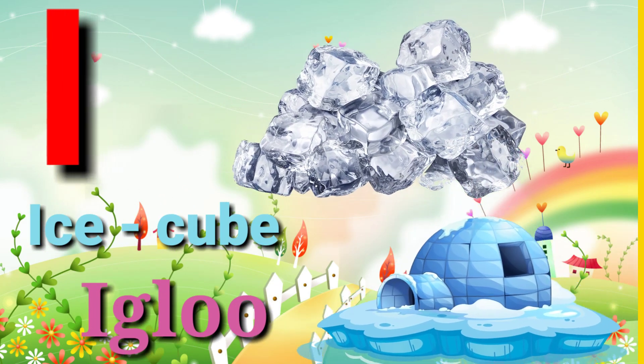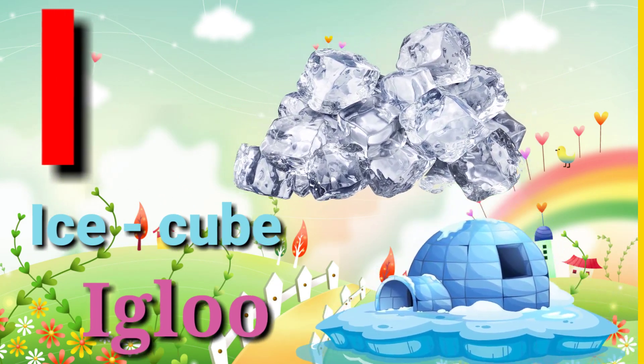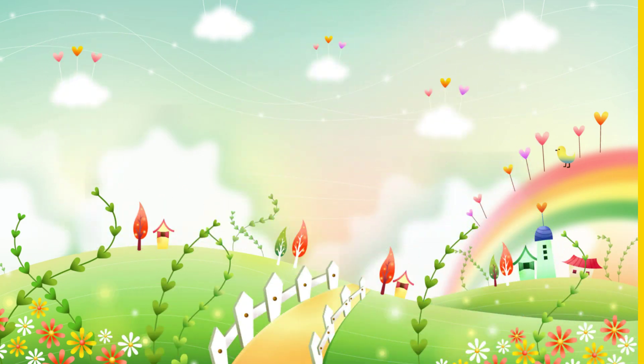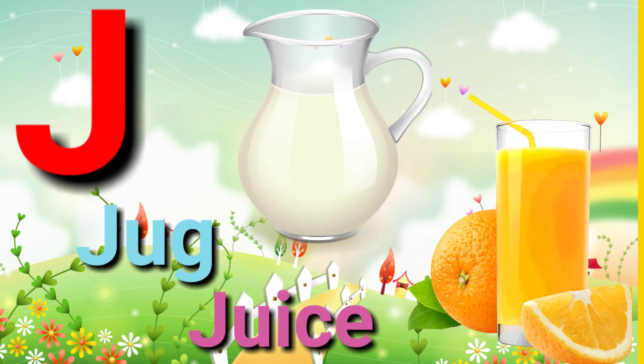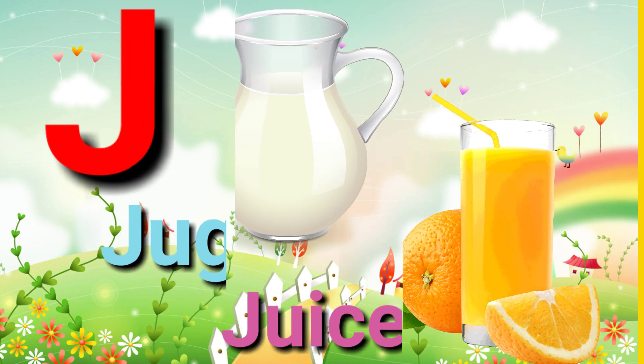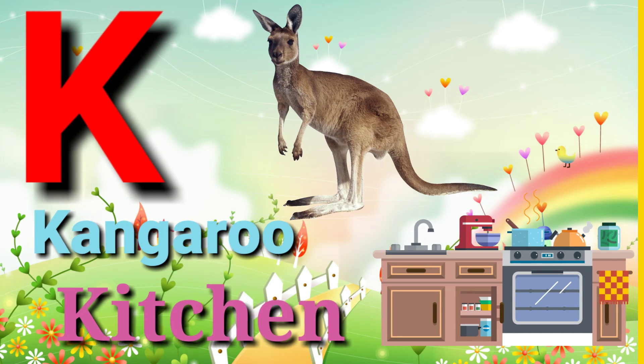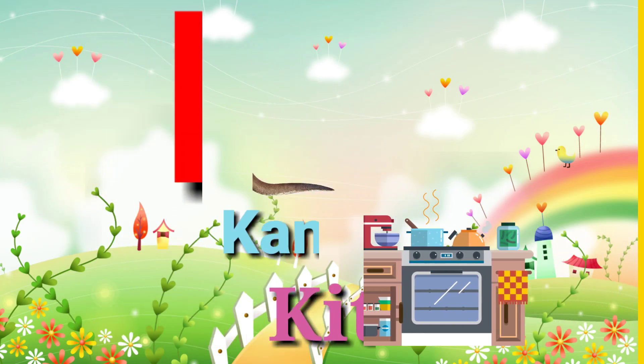I for ice cube, I for igloo, J for jug, J for juice, K for kangaroo, K for kitchen.